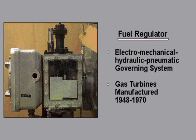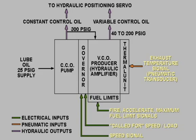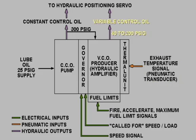The fuel regulator is an electromechanical hydraulic pneumatic governing system for gas turbines manufactured between 1948 and 1970. This system takes electrical and pneumatic input signals to control the fuel flow rate to the combustion chambers of the gas turbine. This hydraulic output signal is known as variable control oil and can vary from 40 to 200 psig depending on the desired fuel flow.